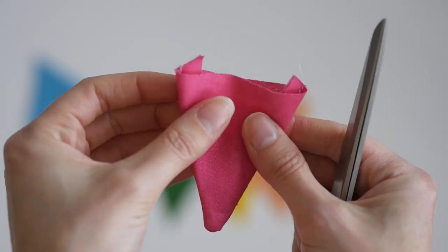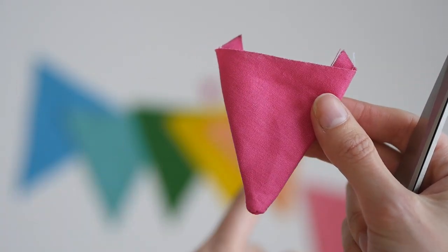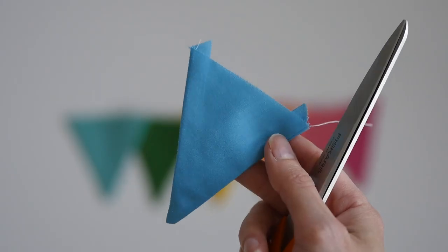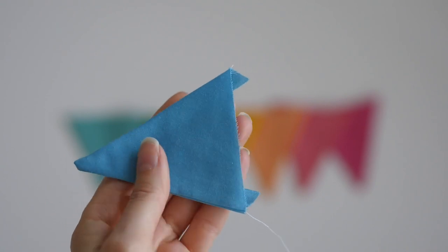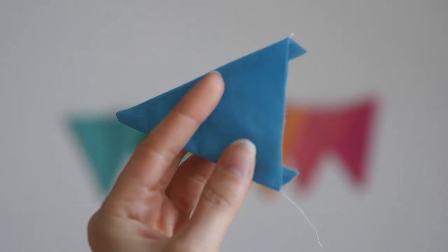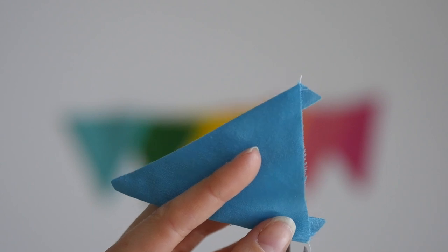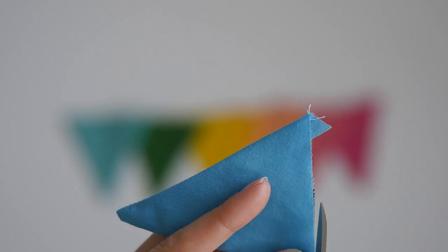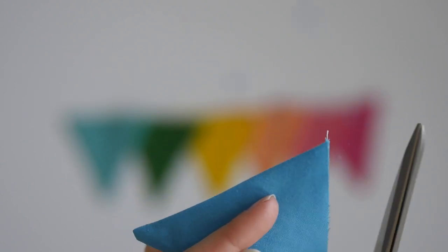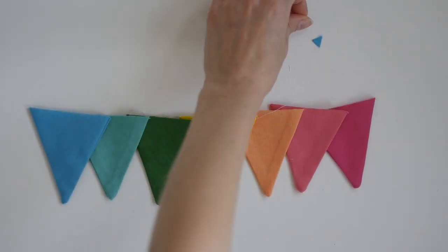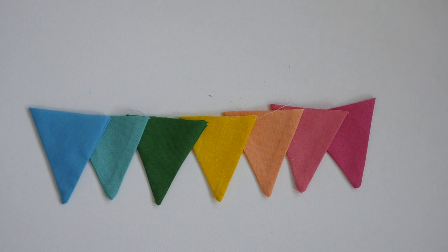I'm just going to keep going like that until you've got all your flags sewn together. All my bunting flags are now turned the right way around, poke the ends out, and I'm just trimming these top corners a little bit so that they're all straight.